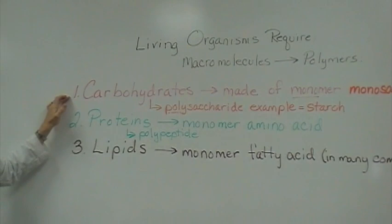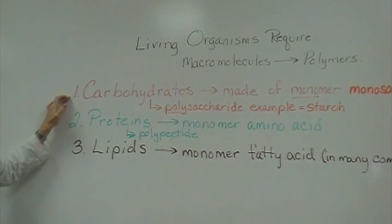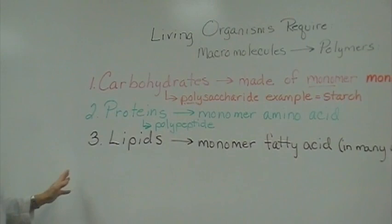These polymer units are what we commonly call carbohydrates, proteins, and lipids. Nucleic acids are the fourth category, we're not examining those in this lab.